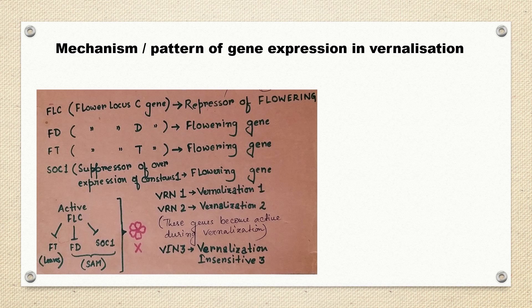That means FLC expression is very high in the vegetative phase since it is a repressor of flowering. On the contrary, FT, FD, and SOC1 are all flowering genes.